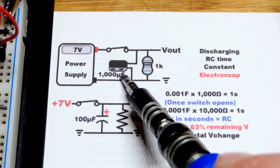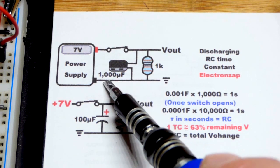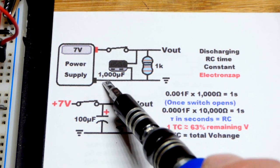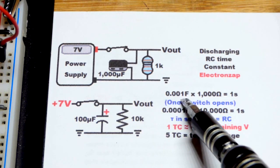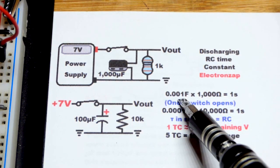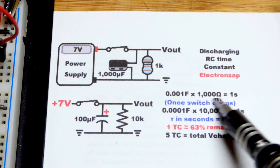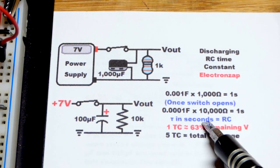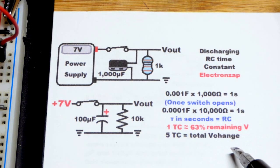Up here we have one one thousandth of a farad or one thousand microfarad. The same as a millifarad but for some reason they just keep going to thousands of microfarads instead of millifarads. But in any case that's one one thousandth of a farad times one thousand ohms you get one second because time constants are in seconds right there when you do the formula.